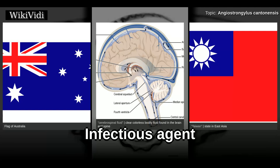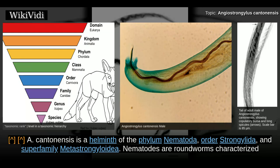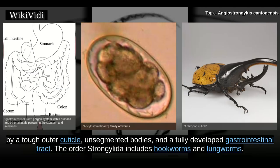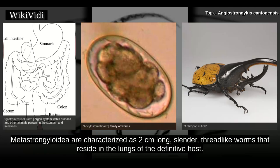Infectious Agent. A. cantonensis is a helminth of the phylum Nematoda, order Strongylida, and superfamily Metastrongyloidea. Nematodes are roundworms characterized by a tough outer cuticle, unsegmented bodies, and a fully developed gastrointestinal tract. The order Strongylida includes hookworms and lungworms. Metastrongyloidea are characterized as 2 cm long, slender, thread-like worms that reside in the lungs of the definitive host.